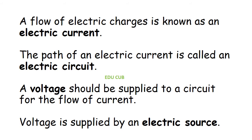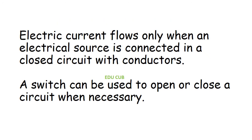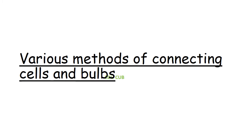Such a flow of electric charges is known as an electric current. The path of an electric current is called an electric circuit. A voltage should be supplied to a circuit for flow of current. Voltage is supplied by an electric source. Electric current flows only when an electrical source is connected in a closed circuit with conductors. A switch can be used to open or close a circuit when necessary.